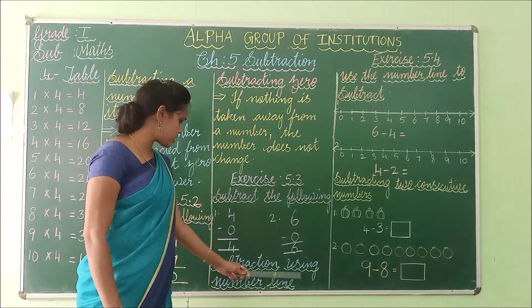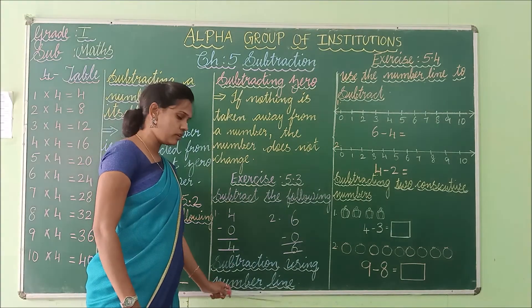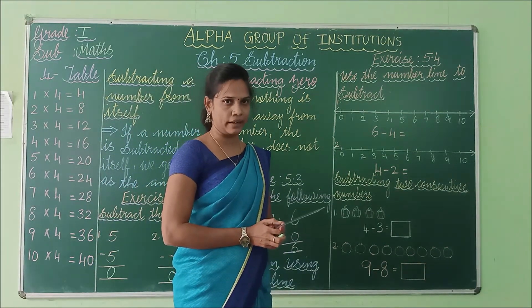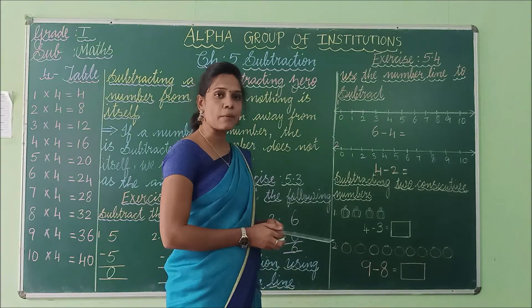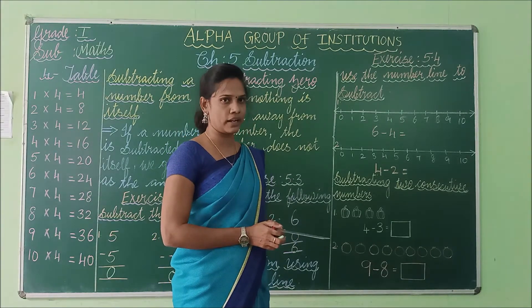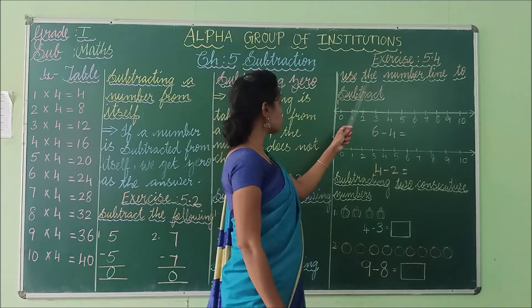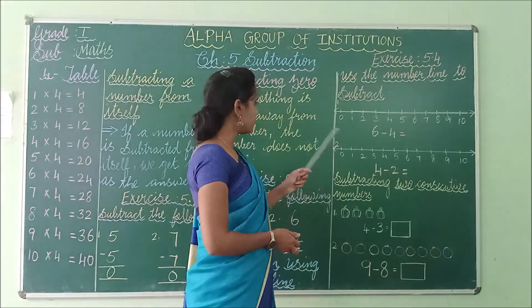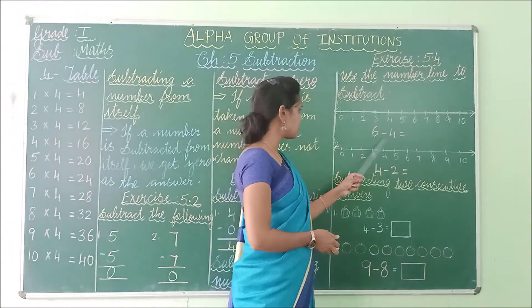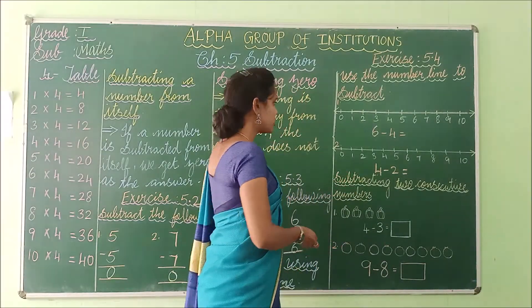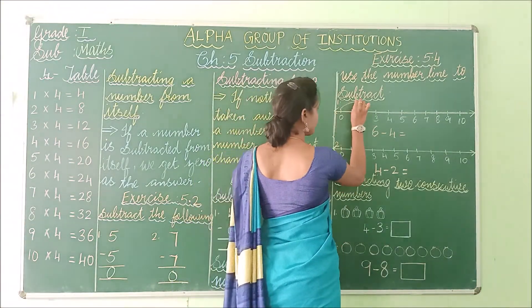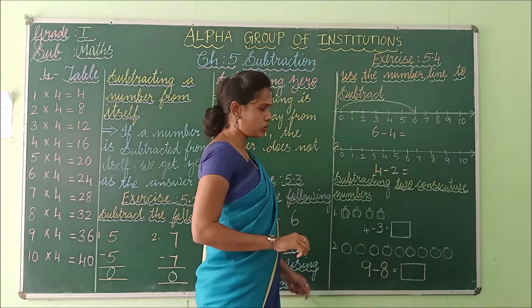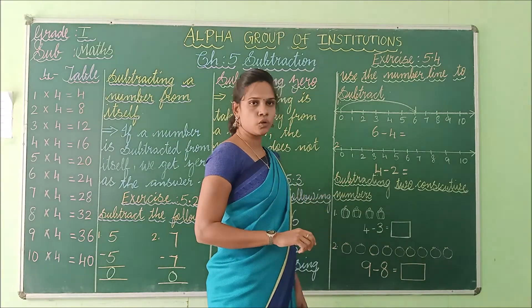Next — subtraction using the number line. We already saw addition using the number line. Now we are going to see subtraction using the number line. Use the number line to subtract. See the first problem: 6 minus 4. From 0, you have to put the arrow mark straight to the 6.